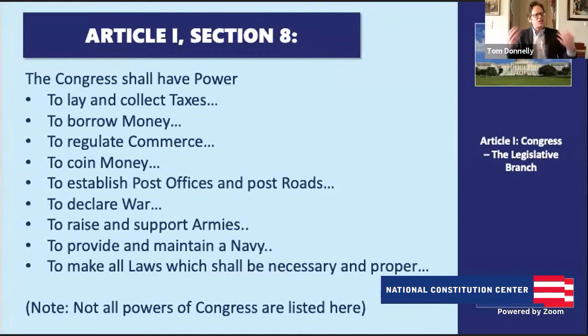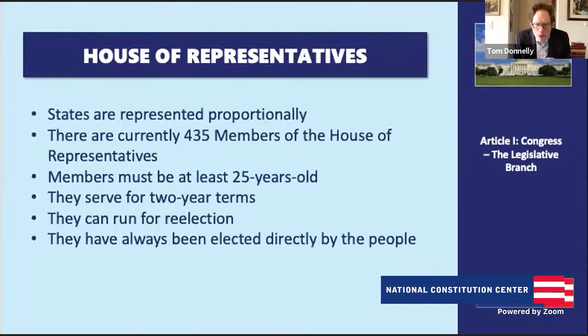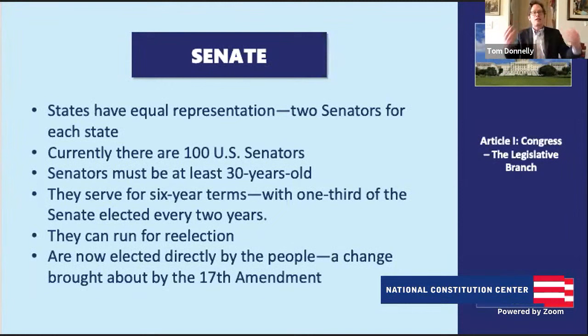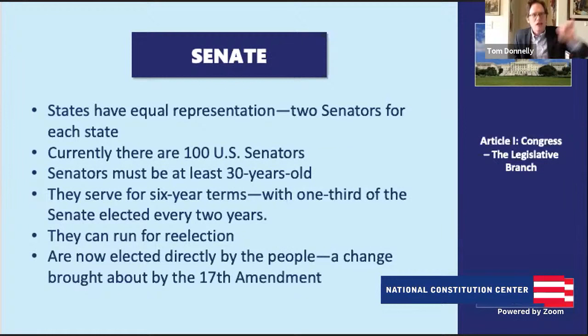In Article I we also learn details about the House and Senate. The U.S. House of Representatives has 435 members. Representatives have to be at least 25 years old and serve two-year terms. The House was designed to be the part of government closest to the people. The U.S. Senate currently has 100 senators who serve six-year terms. Every two years a third of the Senate is up for election. Members of both chambers can run for re-election as many times as they want. The Senate plays a key role in foreign policy and Supreme Court nominations. Because of the 17th Amendment, we now elect senators directly by the voters, not the state legislatures as under the original Constitution.